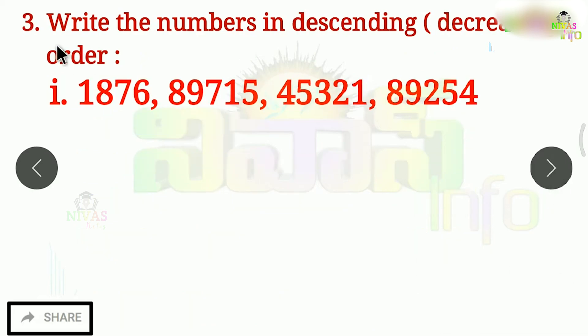The 3rd question is to provide the numbers in descending order. Descending order means decreasing order. With ascending order, you go from a small number to a big number. With descending order, the first number is a big number and the last number is a small number — it is the opposite.